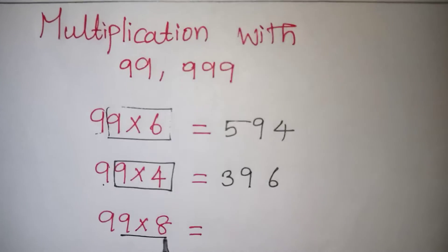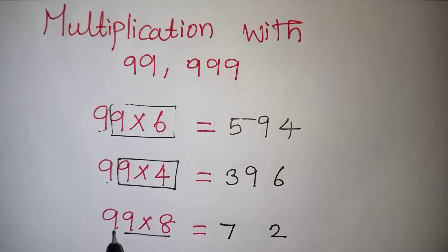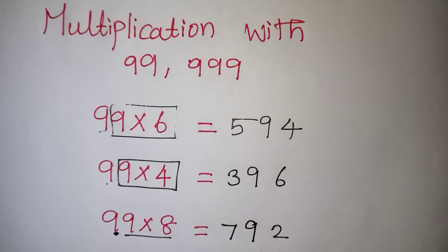Again the same way, 9 times 8 is 72. Write the 7 and 2. And in between, one 9 is remaining here. That 9 should be written in between.